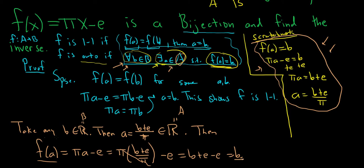So we took any b in capital B. We showed there exists an a in capital A such that f(a) = b. Same thing it says here. For all b in capital B, there exists an a in capital A such that f(a) = b. Thus, f is onto.